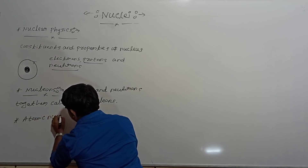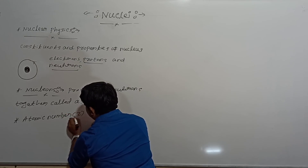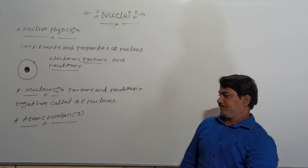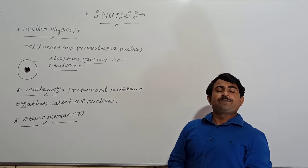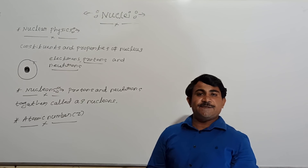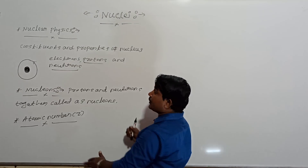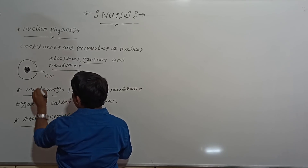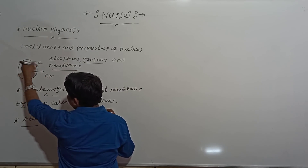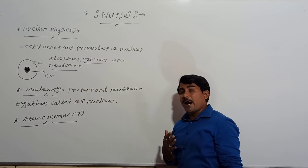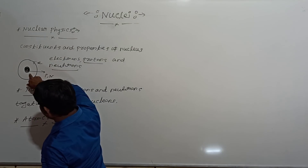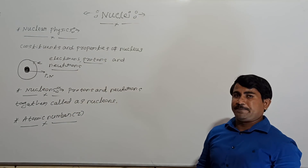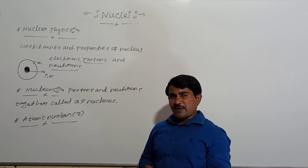Next term is atomic number. Atomic number is the number of protons present inside the nucleus, or the number of electrons present in an atom. Inside the nucleus the components are protons and neutrons, and around the nucleus electrons are revolving in circular orbits. The number of protons present in an atom — that is the atomic number.